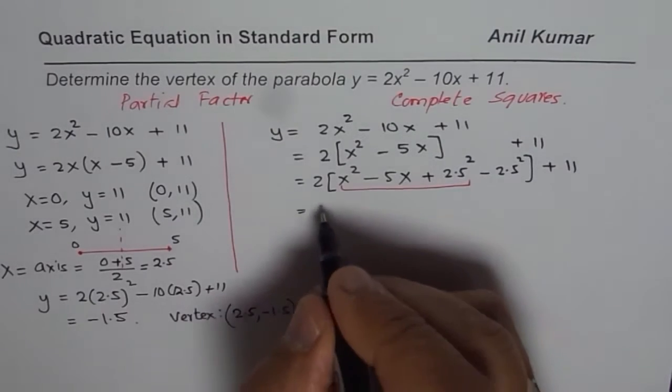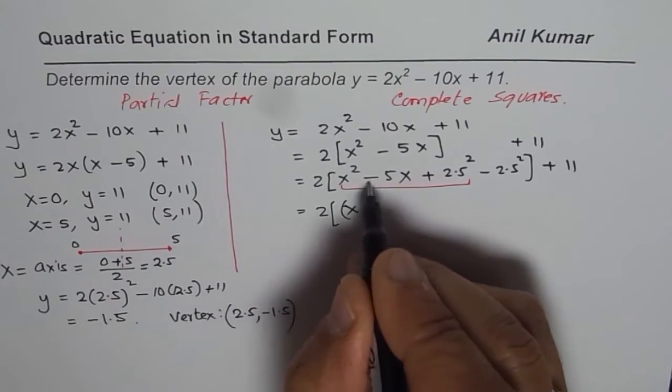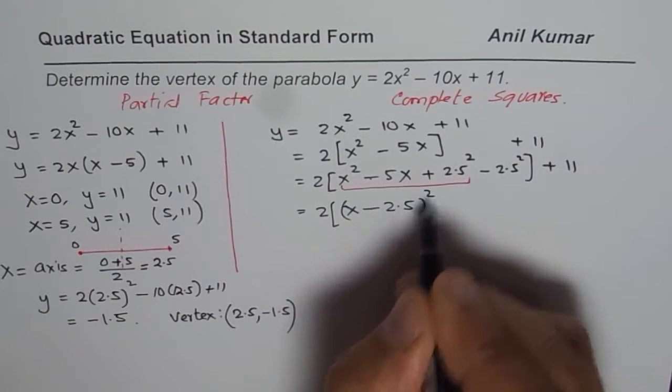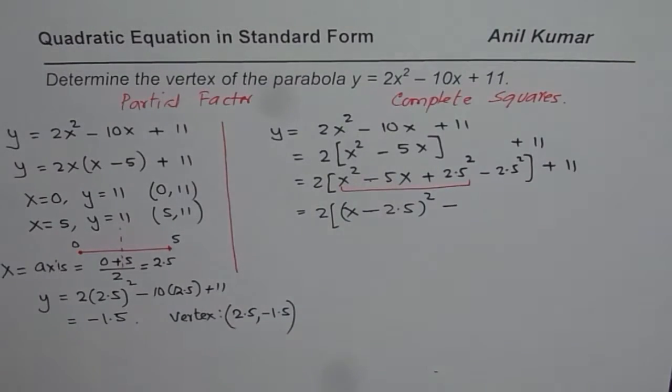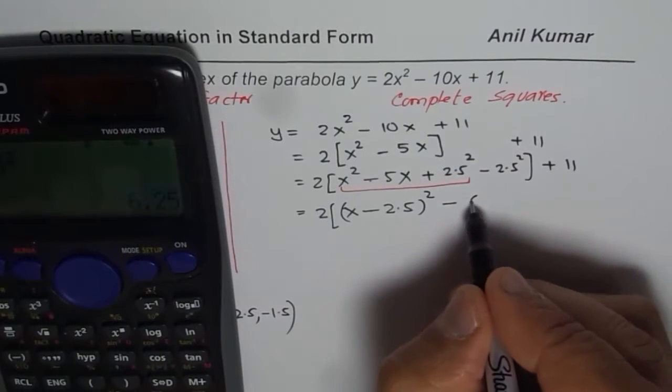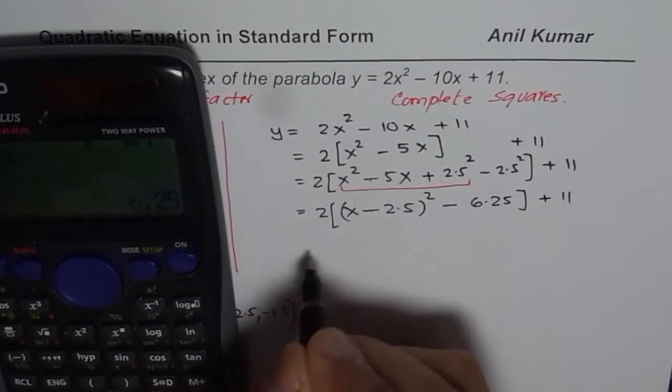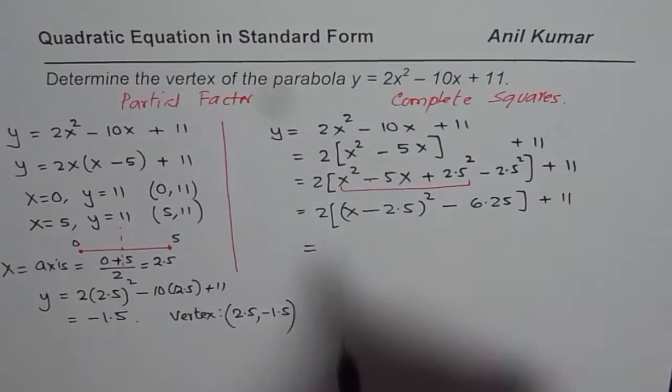And so we could write this as 2 times x minus 2.5 whole squared minus, now let us find square of 2.5. So 2.5 squared equals, in decimals, 6.25, 6.25 plus 11. Now we can actually open the bracket and solve.